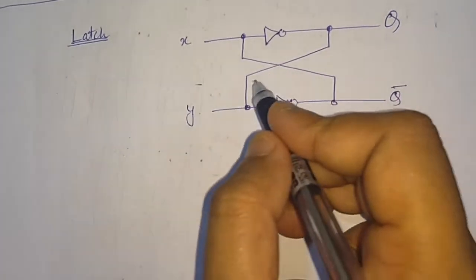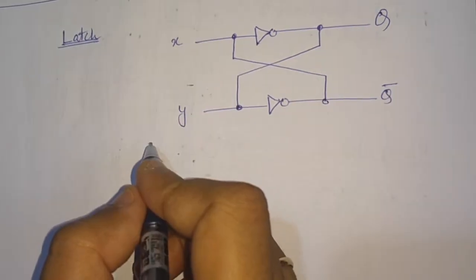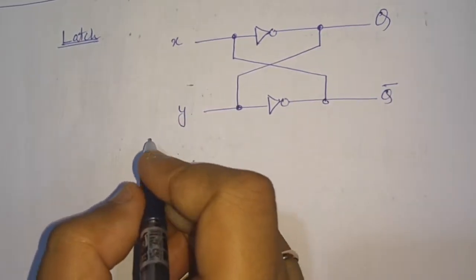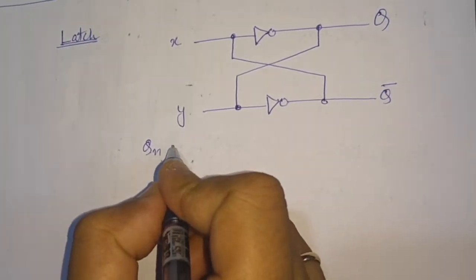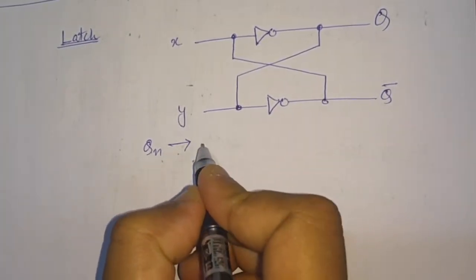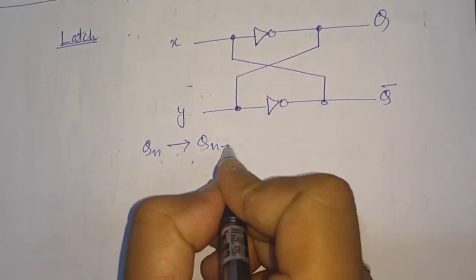That means it holds only one bit number. We often represent the operation of a sequential circuit in terms of the present output Q and the next output Q+1.